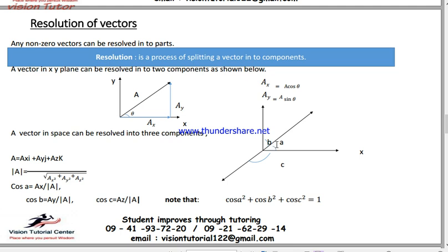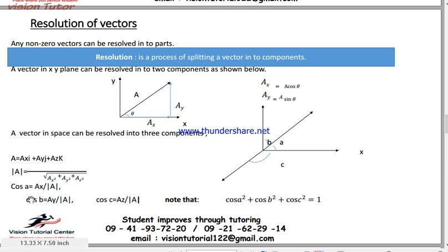Cosine of beta equals AY over the magnitude of vector A. Cosine of gamma equals AZ over the magnitude of vector A. If you square cosine alpha, cosine beta, and cosine gamma and add them, you get AX squared plus AY squared plus AZ squared over the magnitude of A squared, which cancels out, giving cosine squared alpha plus cosine squared beta plus cosine squared gamma equals 1.